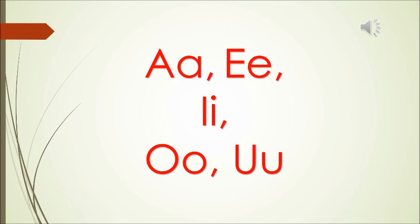With an A here and an I there. Here an E, there an O and a U. Everywhere an A, E, I, O, U. The alphabet has five vowels, A, E, I, O, U. Thank you.